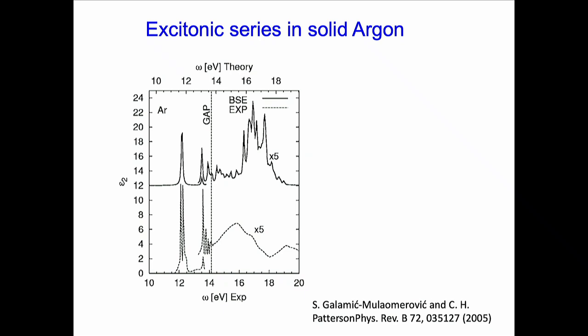Solid argon is an example: at low temperature you can produce it and measure the optical absorption spectrum. In ε₂ you experimentally measure a sequence of peaks. In theoretical calculations you get a hydrogen-like, Rydberg-like series of bound states, which is why theorists are excited — you get a beautiful result that is rather simple to calculate.